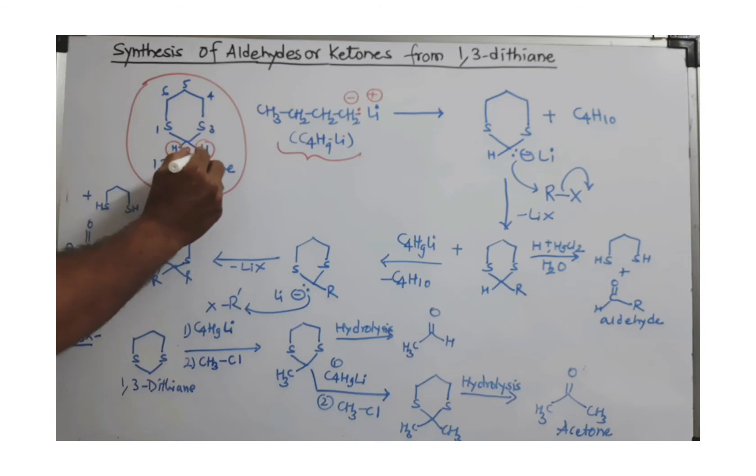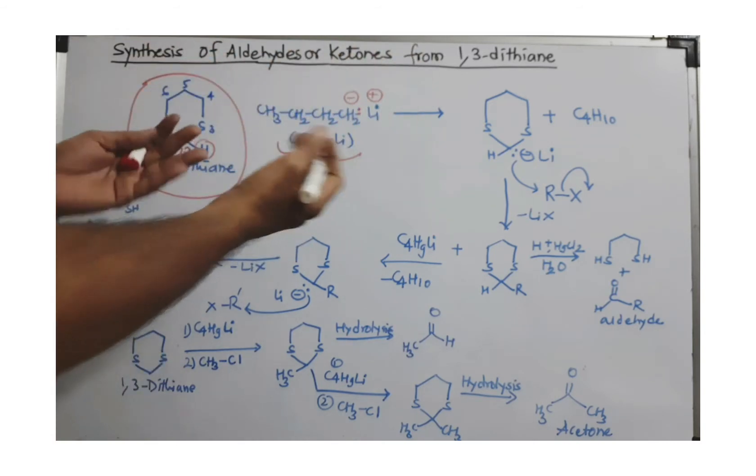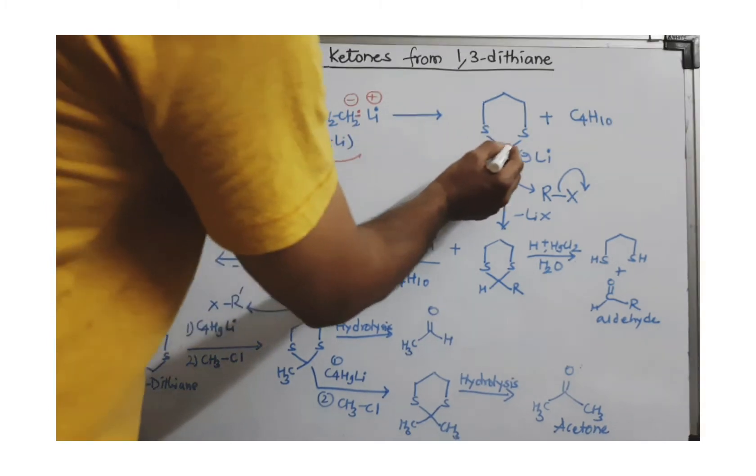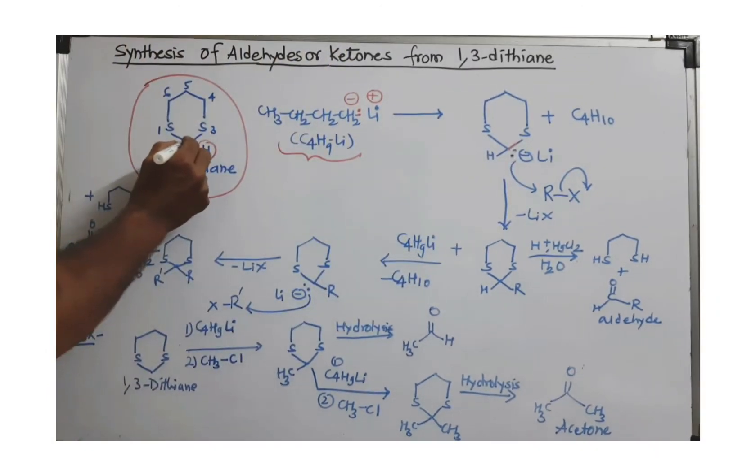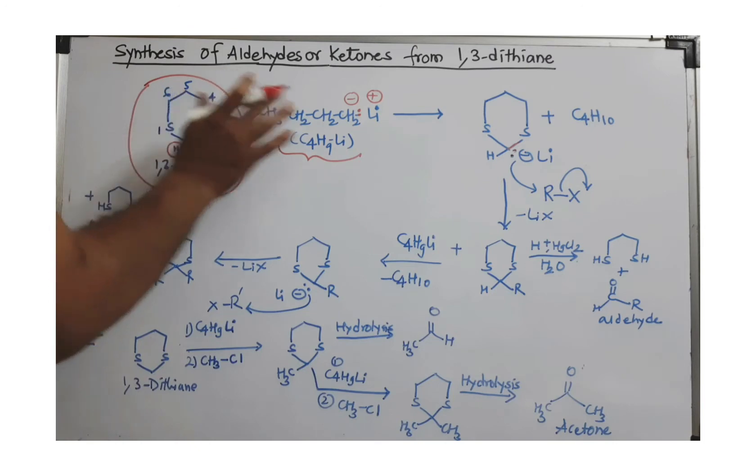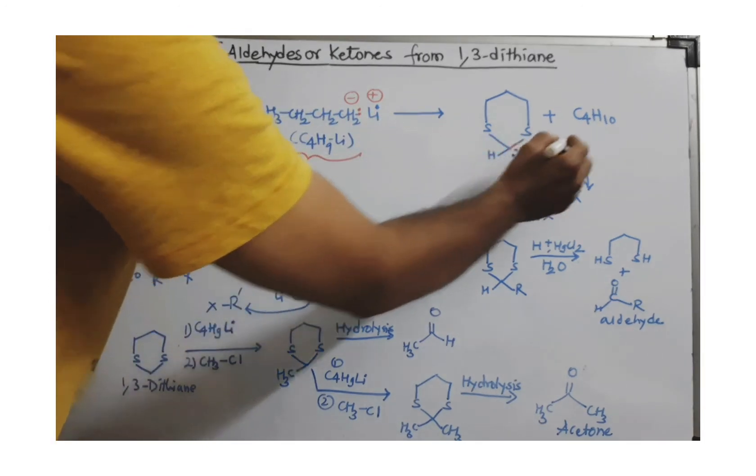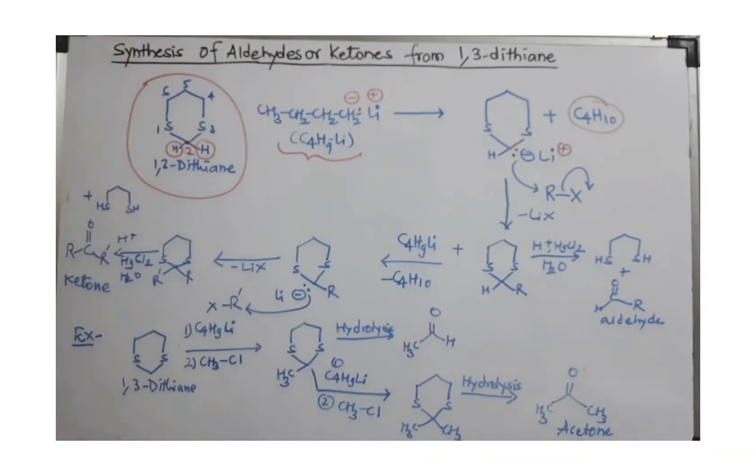This strong base can remove one proton very easily. The first is an acid-base reaction, and this pair of electrons is now residing over this carbon. So this carbanion is generated, and lithium is going to join there as Li+, and we get n-butane.